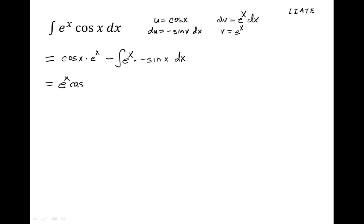So this equals e to the x cosine x plus the integral of e to the x sine x dx. We're going to have to do integration by parts with this second integral as well.